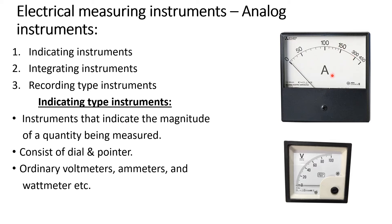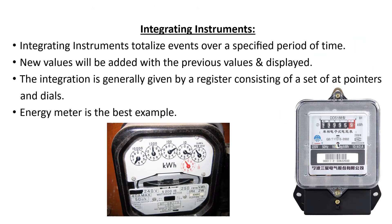Here you can see an analog voltmeter. Whatever the measuring instrument or indicating instrument, it means the instrument consists of a needle and a dial. These are the two necessary requirements for indicating type instruments. The examples for indicating type instruments are ordinary voltmeters, ammeters, and wattmeters.